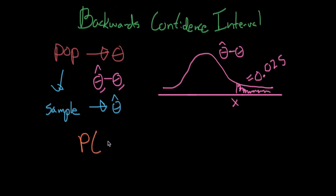So let's write this out. The probability that we get a sample from our difference distribution, which is theta hat minus theta, that is greater than x, is equal to 0.025, which equals 2.5%. So a pretty small likelihood.